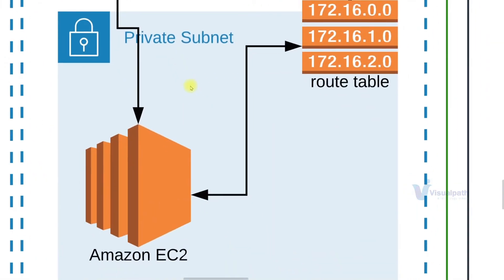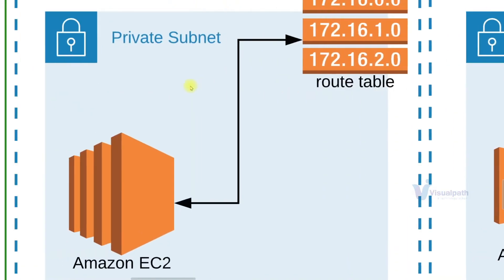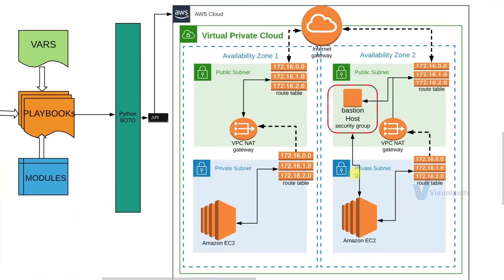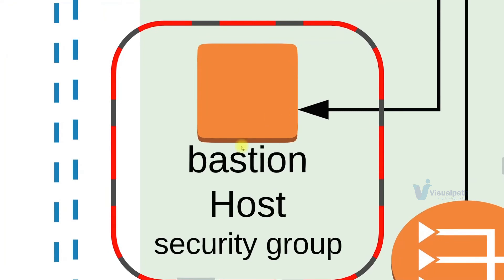We'll also have private subnets in both zones — one private subnet per zone. Each private subnet will have a route table routing all outgoing requests to a NAT gateway. So in summary: a VPC distributed across two zones, one public and one private subnet per zone, with public subnets routing to the internet gateway and private subnets routing to the NAT gateway, which in turn sends traffic through the internet gateway via the public subnet route table.